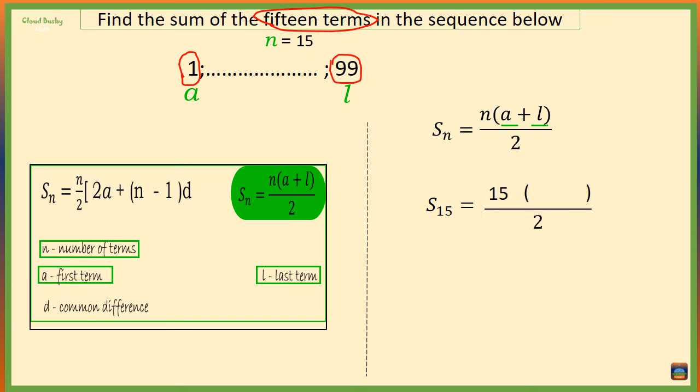1 plus 99 is 100, so we have 15 times 100 is 1500. If we take half of this, the sum of the 15 terms in this sequence is 1500 divided by 2, that is 750.